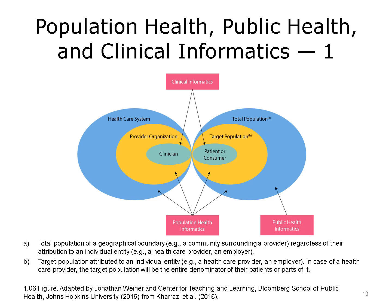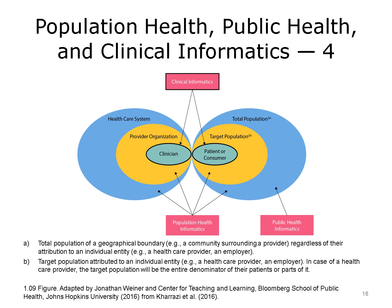This graphic is an important, if a bit complex one. It represents a paradigm about the distinction between population health informatics, public health informatics, and clinical informatics. The graphic provides a framework of the key participants in the system. The ovals on the right represent the consumer side, and the ovals on the left represent the provider side. The central two ovals represent the consumer or patient on the right and the clinician — say doctor or nurse — on the left. This is the essence of the clinical relationship, and as noted by the top box, this interaction is the main domain of clinical informatics.